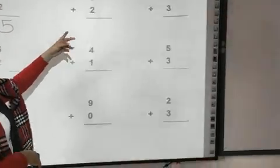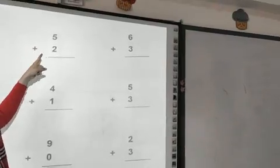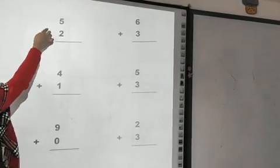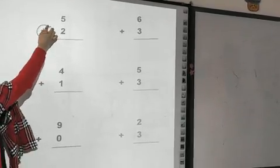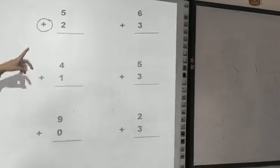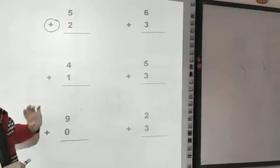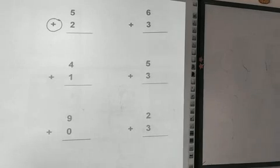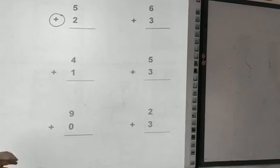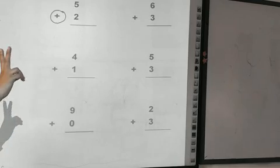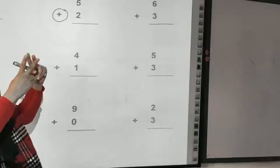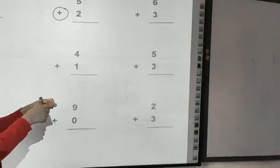Let's move to the next: 5 plus 2. Make a circle around plus to make sure it's a plus. Where is the greatest number — 5 or 2? Five. I will put 5 in my mind and 2 on my finger. After 5: six, seven.